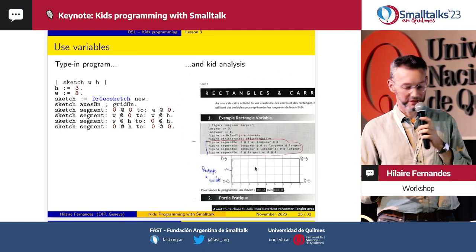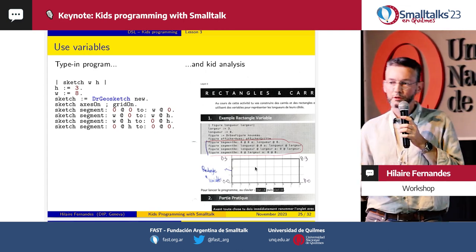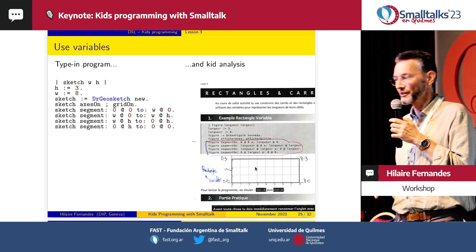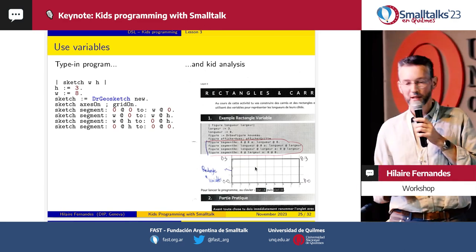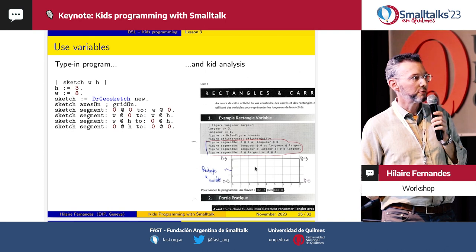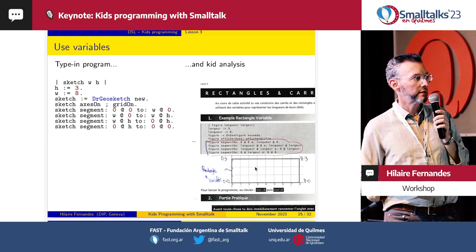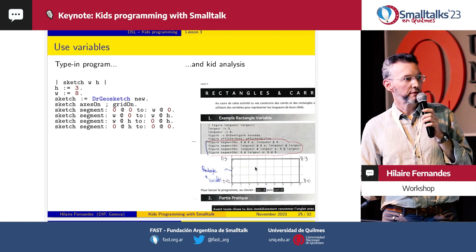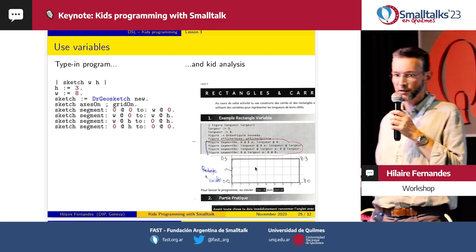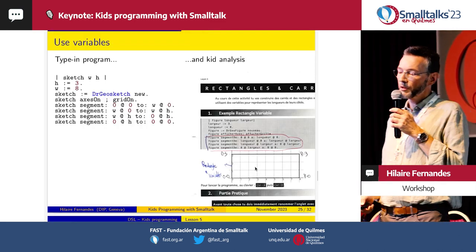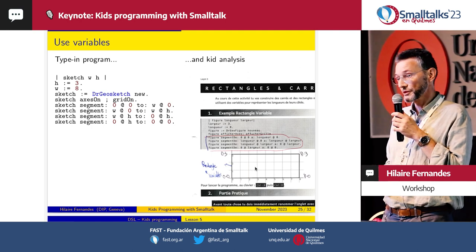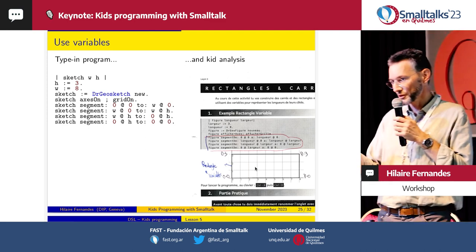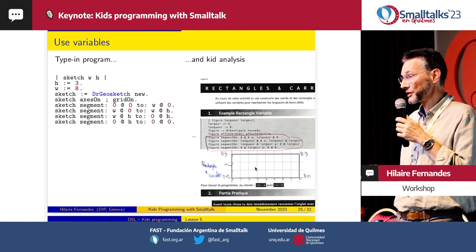Lesson three: we still introduce more variables, but this time we use them as parameters — for us this is very obvious, but that's not the case for a programming newbie. So we just have the rectangle, but now we have two variables for the height and width, used as parameters in place of numbers. When they have the challenge with a rectangle of different size, they just need to change the variable — that's so powerful. They get one powerful idea of programming just by changing the variable.